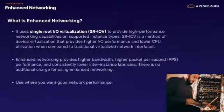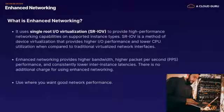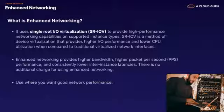Moving on to enhanced networking — sometimes ENIs are just not capable of the network throughput you need for more intense workloads. Enhanced networking uses Single Route IO Virtualization, or SRIOV, to provide high-performance networking on supported instance types. SRIOV is a method of device virtualization that provides higher IO performance and lower CPU utilization compared to traditional network interfaces. Enhanced networking provides higher bandwidth, higher packets-per-second performance, and consistently lower inter-instance latencies — and there's no additional charge, but your EC2 instance must support it.